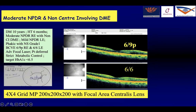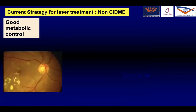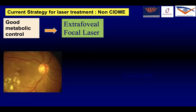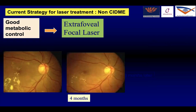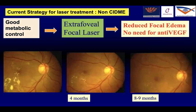With the advent of anti-VEGF, we no longer treat the central part of the macula with laser. Center-involving diabetic macular edema is treated by pharmacotherapy, while non-center-involving or extra-foveal diabetic macular edema is treated with focal laser. In one case, the center was flat with extra-foveal edema — we identified the microaneurysms, differentiated them from hemorrhages, and treated them using green or yellow laser. A 10-year diabetic hypertensive patient with non-proliferative diabetic retinopathy and extra-foveal edema at vision 6/9 was treated with focal photocoagulation using the area centralis lens and did well. Another patient had a circinate ring away from the center — after ensuring good metabolic control, extra-foveal focal laser was done, and by 8–9 months the macular edema had beautifully resolved without needing anti-VEGF.